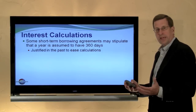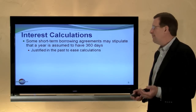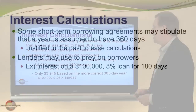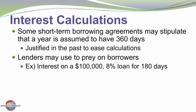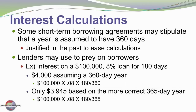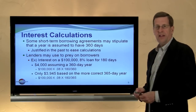Regarding interest calculations: some short-term borrowings stipulate that a year is assumed to have 360 days. This might be justified as a simplification, but lenders may use it to take advantage of borrowers. For example, on a $100,000, 8%, 180-day note, assuming a 360-day year gives $100,000 × 8% × 180/360 = $4,000 of interest, whereas using a 365-day year yields only $3,945. So it's very important in note agreements to pay attention to whether a 360- or 365-day year is assumed.